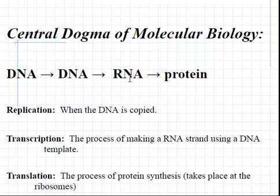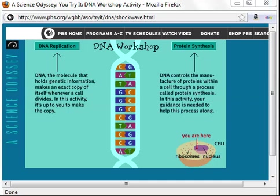So when DNA is used to produce RNA, this is the process of transcription. Finally, we'll look at the process of translation. This is when the RNA molecule will be read by a ribosome in order to produce a polypeptide or a protein. We're going to use a website from PBS called DNA Workshop. Many of my students have let me know that this may not work in some more modern browsers, so I've recorded a video to allow students who aren't able to use the shockwave version to see the video and understand how these processes of replication, transcription, and translation occur.